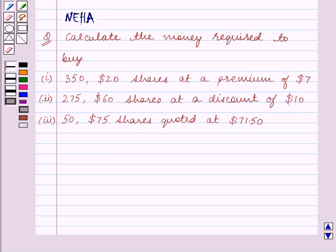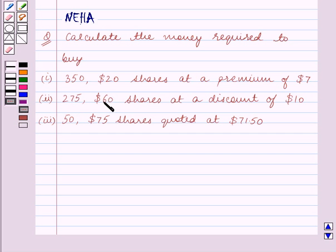Hello and welcome to the session. In this session we will discuss the following question: Calculate the money required to buy — Part 1: 350 $20-shares at a premium of $7; Part 2: 275 $60-shares at a discount of $10; Part 3: 50 $75-shares quoted at $71.50. Let's start the solution now.